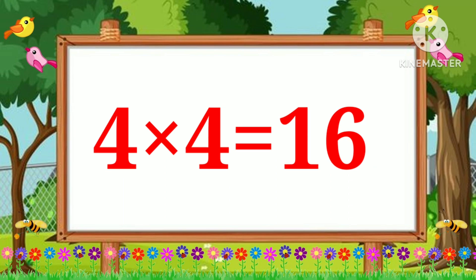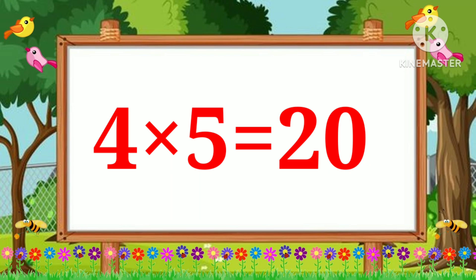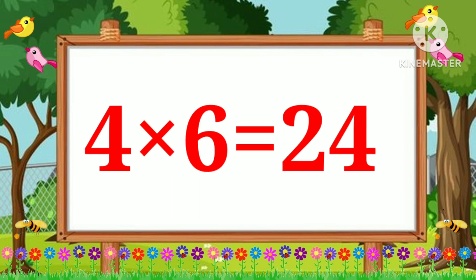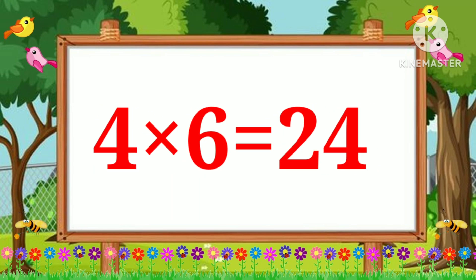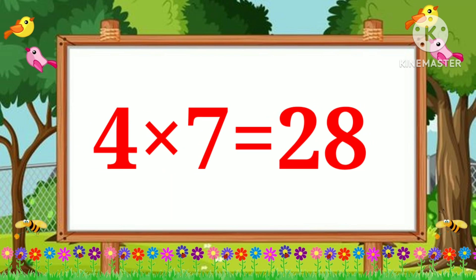Four fours are sixteen. Four fives are twenty. Four sixes are twenty-four. Four sevens are twenty-eight.